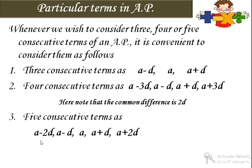अगर आपको five consecutive terms suppose करना है तो you will suppose: a minus 2d, a minus d, a, a plus d, and a plus 2d. जब भी आपको three, four, या five consecutive terms पर कोई question पूछा जाए, suppose करते time आपको यही suppose करना है, and you will get the answer easily.